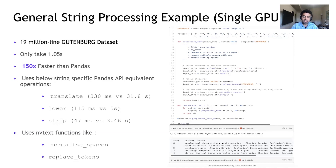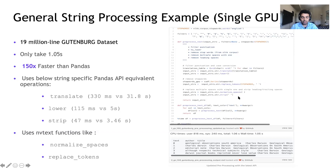Apart from Pandas-equivalent functions, we also use NVText functions. The functions used here are normalize spaces and replace tokens. Normalize spaces replaces multiple occurrences of a space with a single one. Replace token is used for replacing stop words or commonly occurring words with a whitespace character. As you can see, this is a very similar API to what you'd expect in Pandas, but now it just works on GPUs and is really fast.